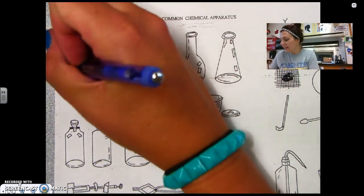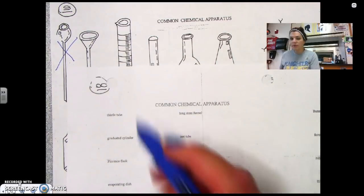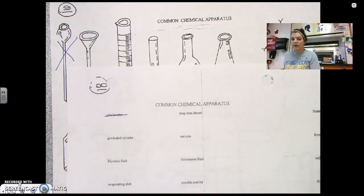This first thing here is the thistle tube. By the way, these notes are on page 16. This is a thistle tube, so we can go ahead and cross that guy off. We're not going to talk about him.